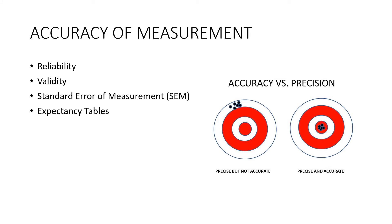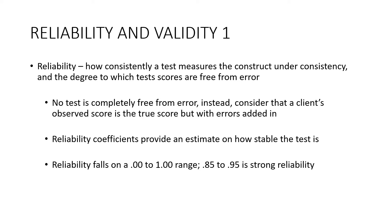Accuracy of measurement involves reliability, validity, the standard error of measurement (SEM), and expectancy tables. We've already discussed reliability and validity earlier in the semester, but we'll review them here in an applied way. Looking at the slide image comparing accuracy versus precision: precise but not accurate means you're consistent — always hitting the same spot — but it's not the center. When all shots are in the middle, it's both valid and reliable.